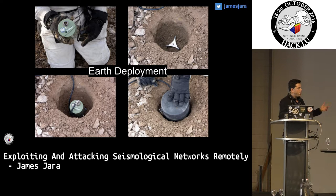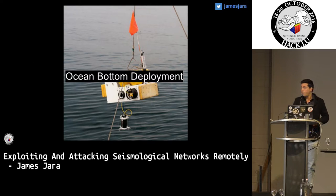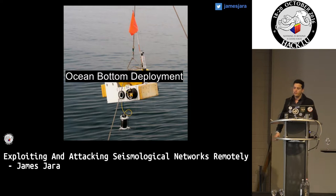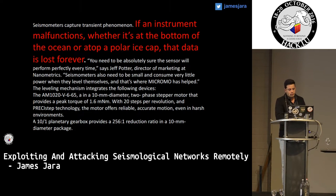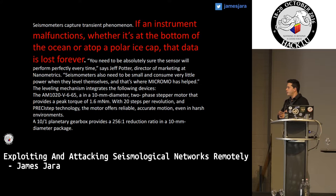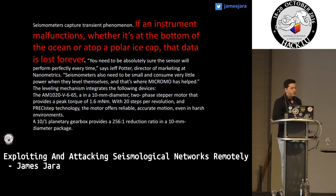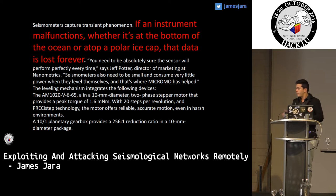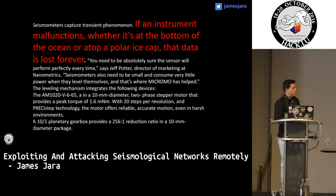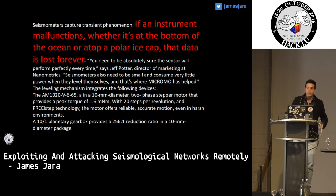This is how it looks — the air deployment, which is pretty simple, and the ocean bottom deployment, which is complex. We are talking about deployments of one month. We have Jeff Potter, the marketing leader of Nanometrics, who claims that if the instruments malfunction — whether it's at the bottom of the ocean or a polar cap — the data will be lost forever. If they don't work for even one second, they will lose the data forever. There is no other way to recover it.